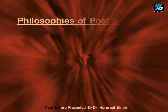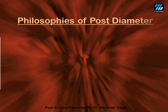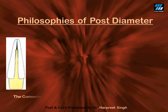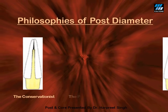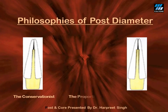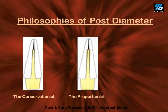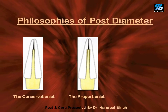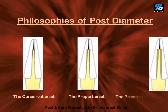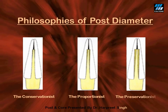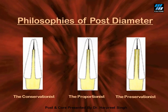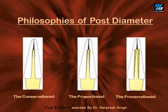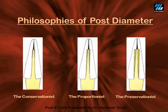How much should be the diameter of the post? There are three approaches. First, the conservationist approach, which says that a minimal amount of dentine should be removed during post space preparation. Second, the proportionist approach, which says the post space should be one-third of the diameter of the root. Third, the preservationist approach, which says that a bare minimal amount of 1 mm of sound dentine should be present all around the circumference of the post.